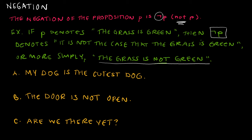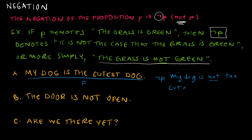The first example says 'my dog is the cutest dog,' which is a true proposition, by the way. So 'my dog is the cutest dog' is my proposition P. If I want to write not P, then it would be 'my dog is not the cutest dog.' We could say 'it is not the case that my dog is the cutest dog,' but it's easier to write it the way we would normally say it in English.